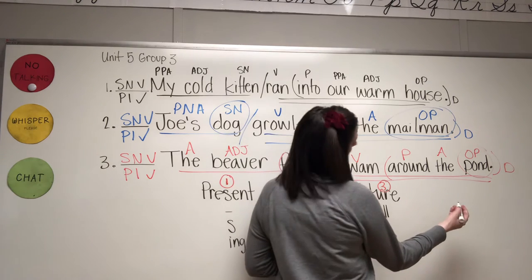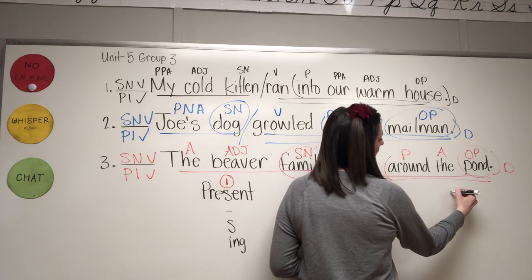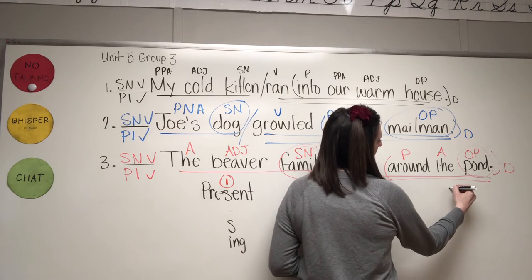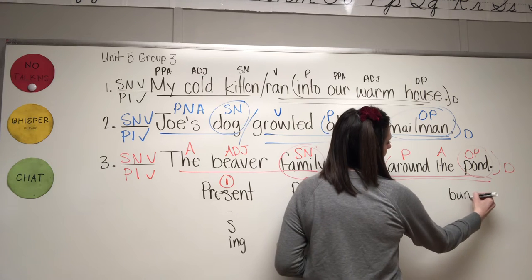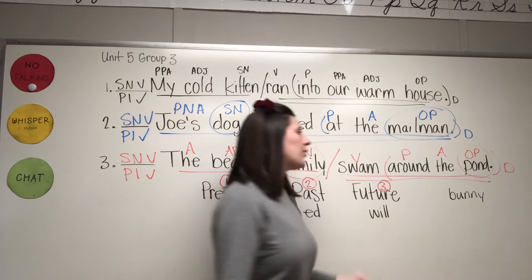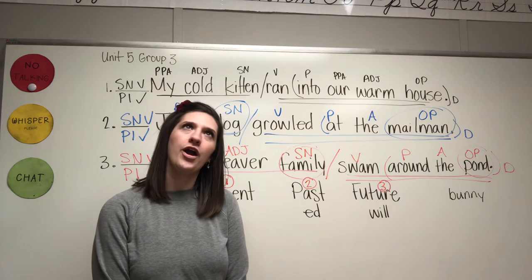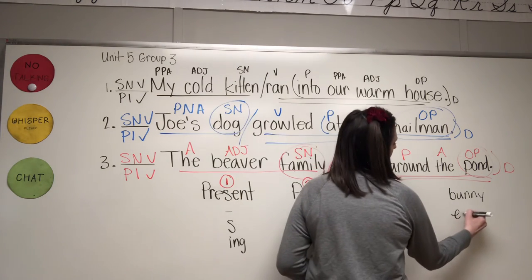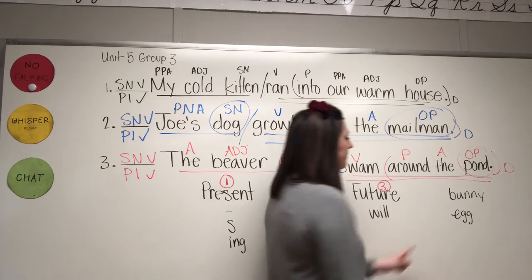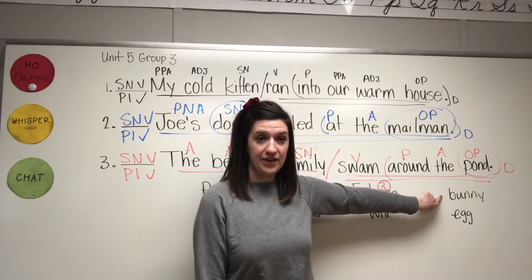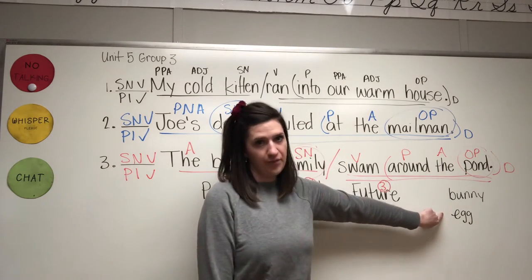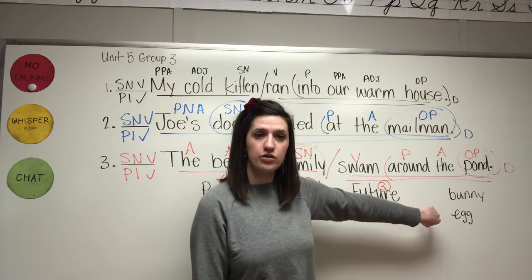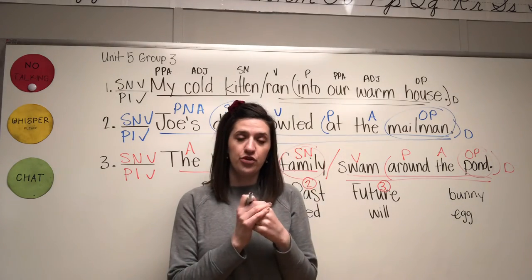If we have the word bunny, and we have the word, bunny starts with a consonant, egg starts with a vowel, and this will be the clue to know whether you're supposed to use an a or an an.